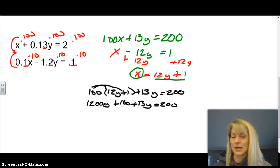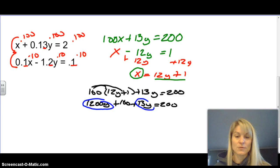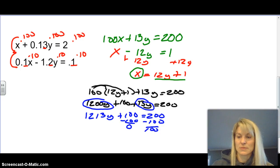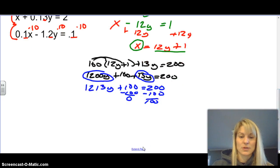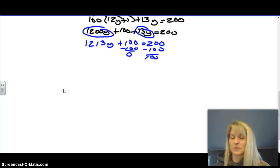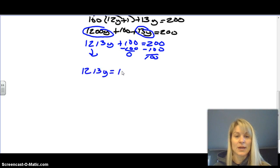So here, I have like terms. I have 1200y and I have 13y. So I'm just going to add those together for 1213y. Now I know these look like big numbers, but it's easy math. So then we subtract 100. So that gives you 0 and 100. Hopefully you can see this. I'm not losing you in my head here.